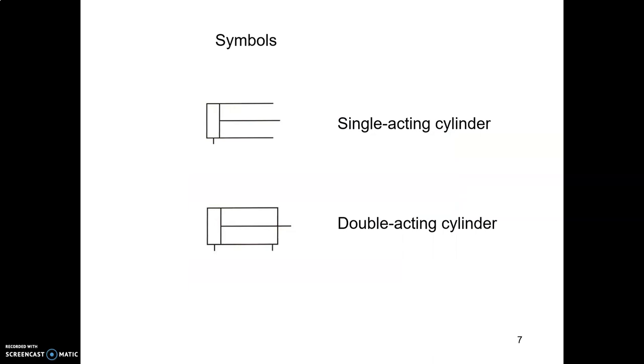Here are symbols for cylinders. Notice the single acting cylinder is open in the top end, and it has only one port. Notice how simple this thing is to draw. Here's a double acting cylinder, and notice how simple this thing is to draw as well. It looks just like a single acting, except it's closed along the rod end, and it has lines representing two ports.